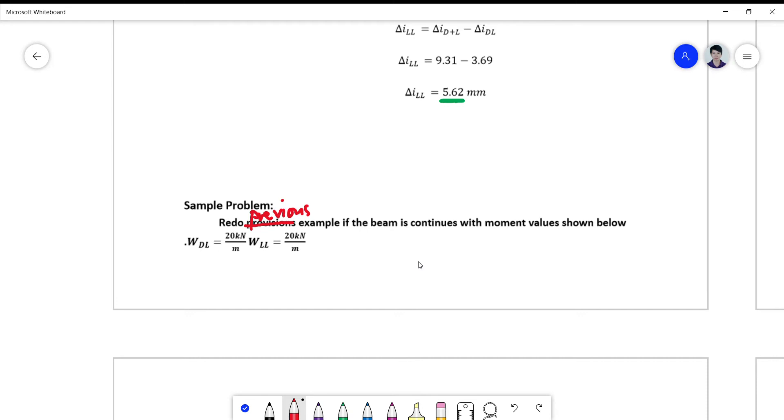Okay, let's do another example here which is basically the same as the simply supported beam example. We are asked to redo the previous example if the beam is continuous with moment values shown below.